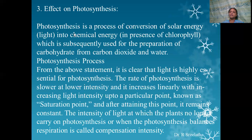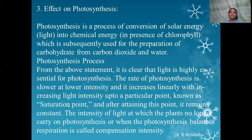Effect on rate of photosynthesis: light affects the rate of photosynthesis, which is the process of conversion of solar energy into chemical energy in the presence of chlorophyll, subsequently used for the preparation of carbohydrates from carbon dioxide and water. The rate of photosynthesis is lower at lower intensity and increases linearly with increasing light intensity up to a particular point known as the saturation point, after which it remains constant. The intensity of light at which photosynthesis balances respiration is called the compensation intensity.